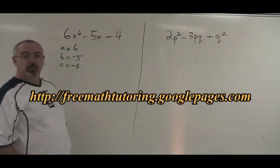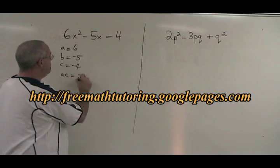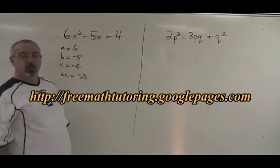But we need a fourth number to work with. We have to multiply a and c together. ac is equal to negative 24, 6 times negative 4 in this case.